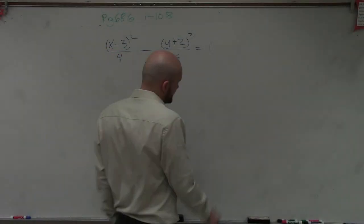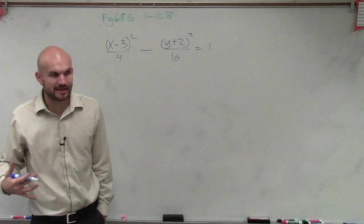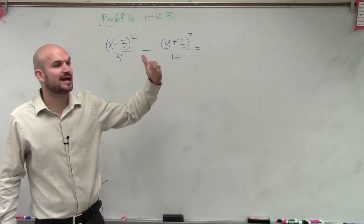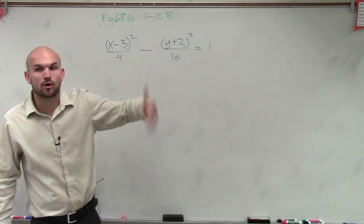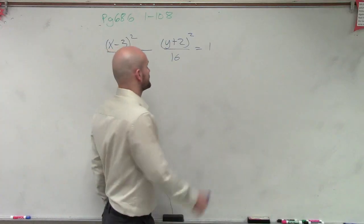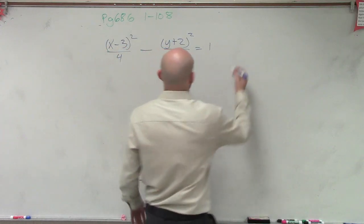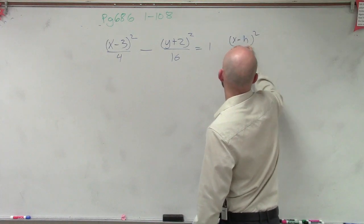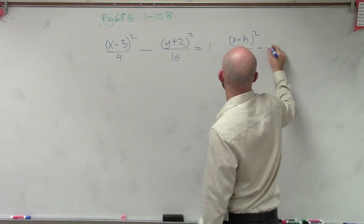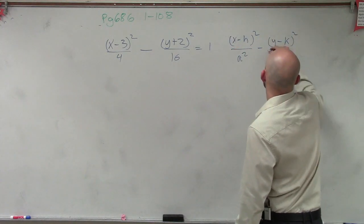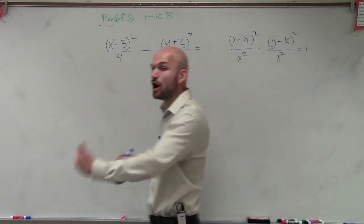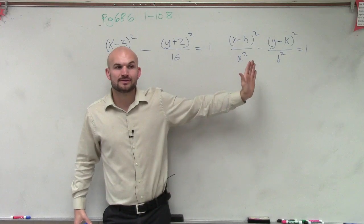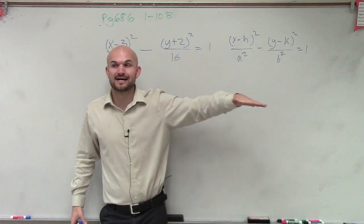If you guys remember, when we're dealing with this, what we need to look at is we have this formula. We need to determine if our transverse axis is going to be vertical or horizontal. Every single one of our formulas — because we're going to have to graph it — if I have (x minus h)² over a² minus (y minus k)² over b² equals 1. Remember a hyperbola, it's always a² minus b². So since we have our x² over the a, does that mean we're going to have a transverse axis that's horizontal or vertical?